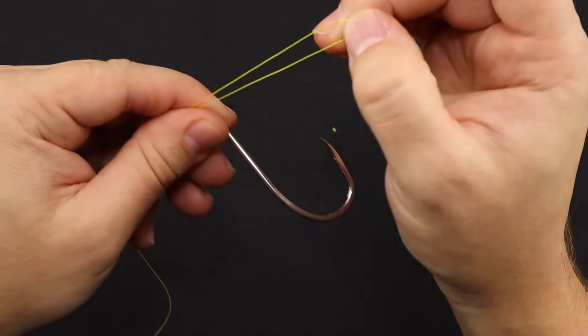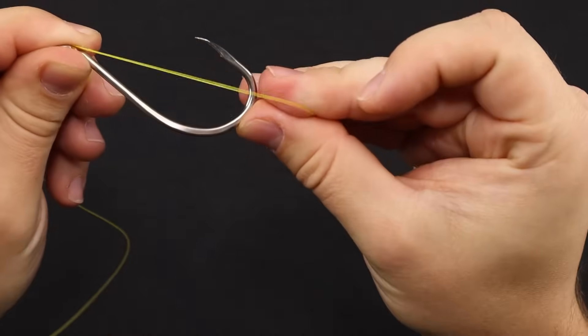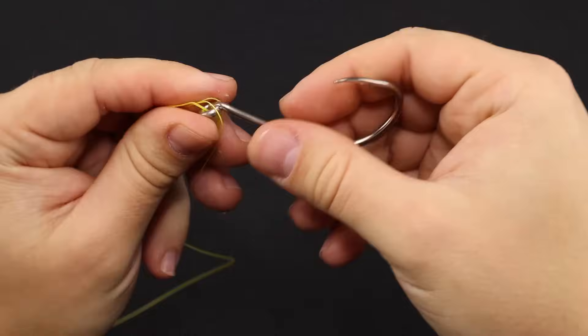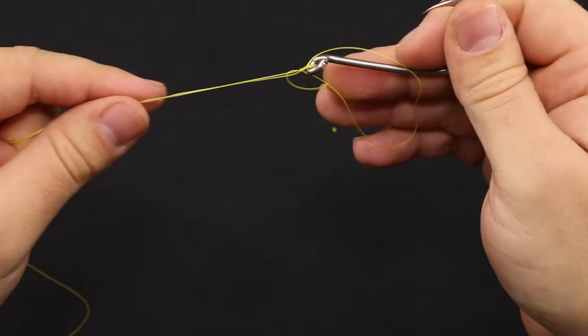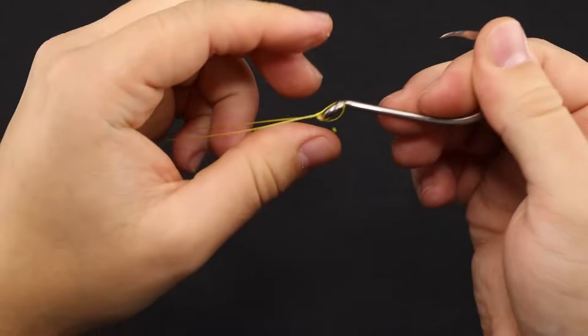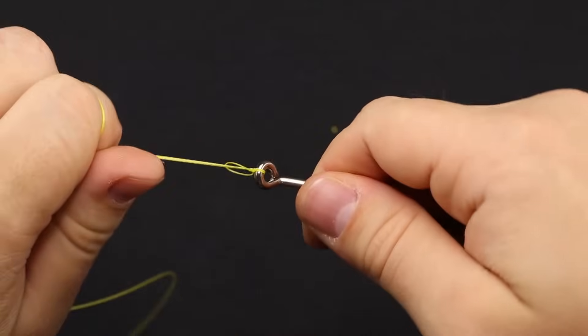Now with your loop end, go ahead and pass that around your item just like so. Then with the left tag and main, you can start pulling this knot together. And make sure your line goes onto your knot just like so.